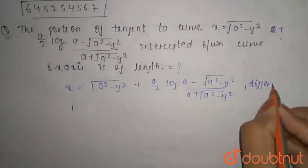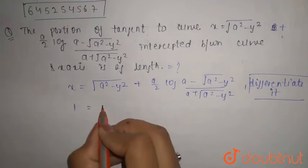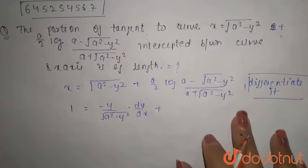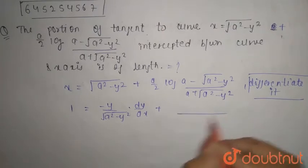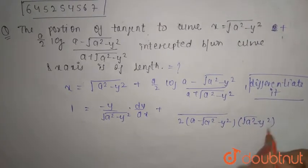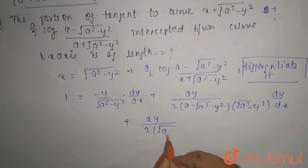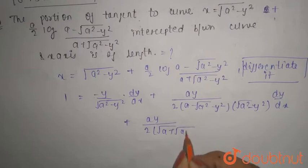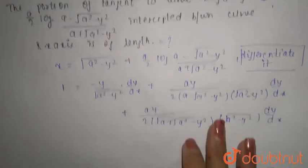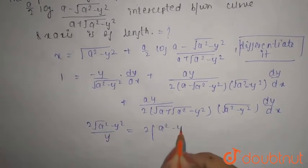Differentiating with respect to x: the differentiation of x is 1, and differentiating the right side gives minus y over root(a² - y²) times dy/dx, plus by the quotient rule, terms involving 2(a minus root(a² - y²)) and root(a² - y²) times a·y·dy/dx. This simplifies to 2·root(a² - y²)/y equals (2(a² - y²)/y²)·dy/dx.